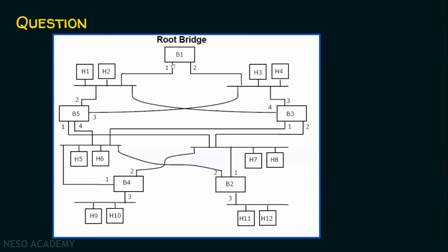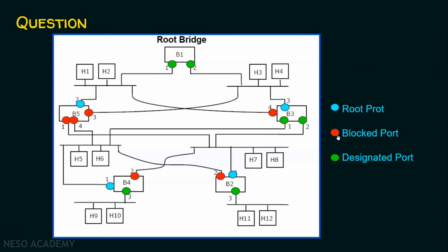The other ports are designated ports. There are three kinds of ports which we have seen in the previous lecture: root ports, designated ports, and blocked ports. Blue color represents root ports, red represents blocked ports, and green represents designated ports. For example, B3 can reach B1 through port number 3 and will not choose port number 1, because going via B5 to B1 is a longer path. So port 3 is the root port for B3, and the opposite side is the designated port. Per link, one root port and one designated port.